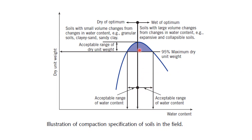On the left-hand side (dry of optimum), from 100% to 95% maximum dry density, we can have a range of dry density and corresponding water content. This compaction curve can be plotted for the standard Proctor test or for the modified Proctor test.